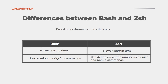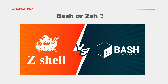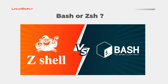Last, I will be differentiating them based on performance and efficiency. Bash has a faster startup time, whereas ZSH takes time to load. There is no execution parity for commands in Bash, whereas you can set up parity for different commands in ZSH. Although ZSH has better performance and advanced features, Bash is widely used from the very beginning, from beginners to advanced learners.